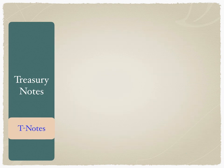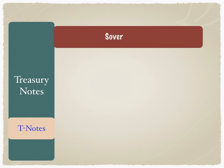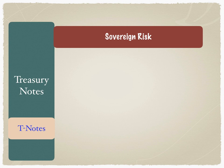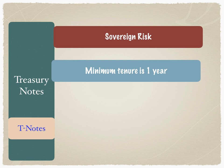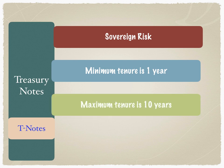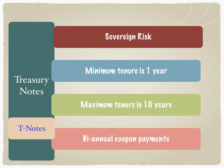Treasury notes, also notated as T-notes, represent the sovereign risk of the US federal government. This means that treasury notes are the safest in the notes market, as it is not expected that the government of the United States will default — hence they carry zero default risk. Since there is no default risk, the credit ratings are very high, and this rating is called the sovereign risk rating of the United States government. The minimum tenure for the notes market is one year and the maximum tenure is 10 years, with biannual coupon payments.